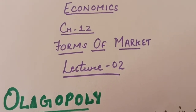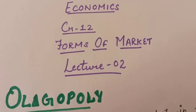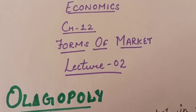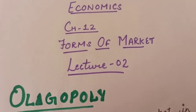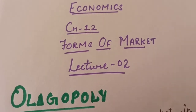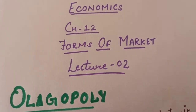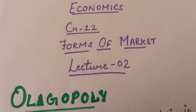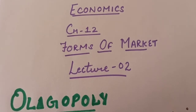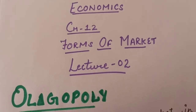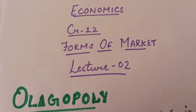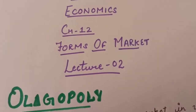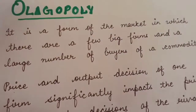In our lecture number 1, we read about Perfect Competition Market. In that lecture, I told you that there are 4 kinds of market: Perfect Competition Market, Monopoly Market, Monopolistic Market, and Oligopoly Market. Perfect Competition Market we have already read. Monopoly and Monopolistic Competition Market are not in your syllabus — they are deleted. So in this lecture, we are going to read about Oligopoly Market.